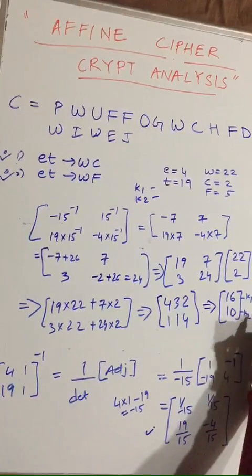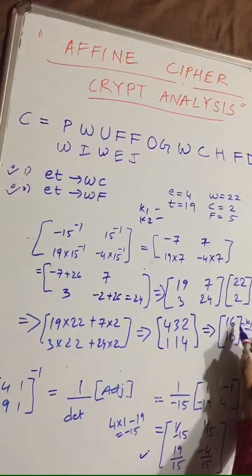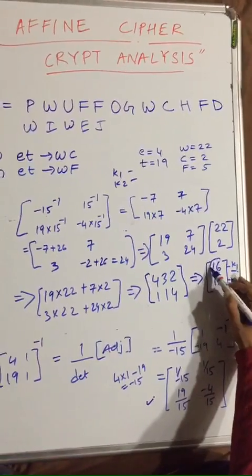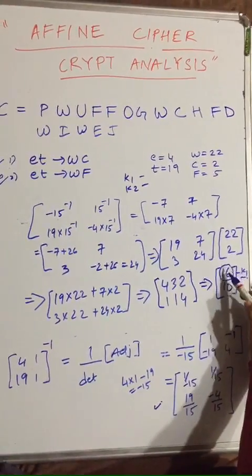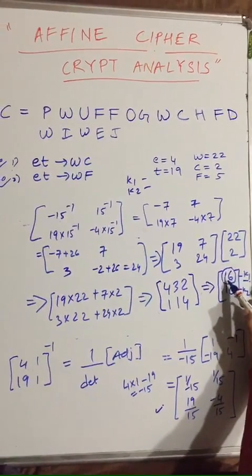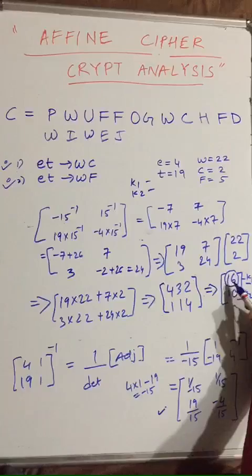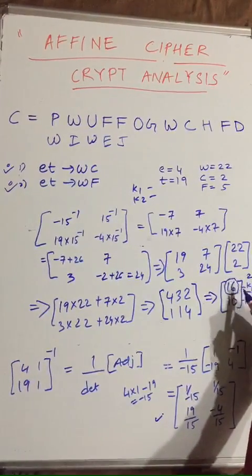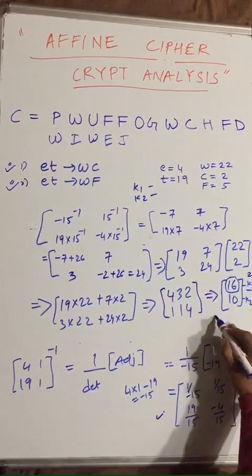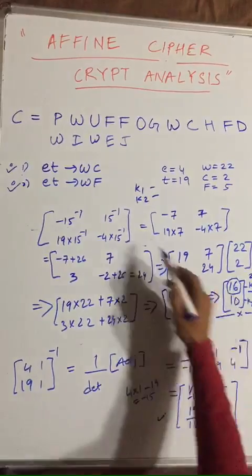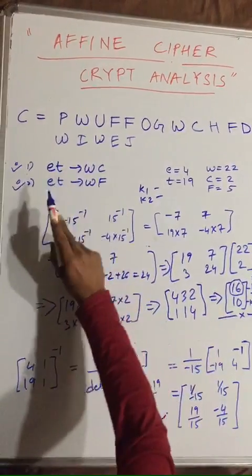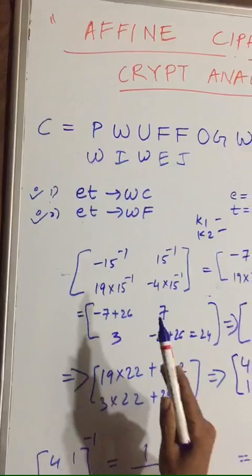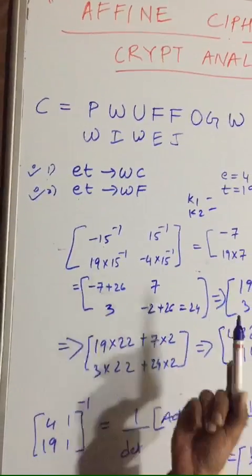However, for k1 we need gcd(k1, 26) = 1. But gcd(16, 26) = 2, which is not equal to 1, so this solution is not valid. We now have to move to the pair 'et'→'wf', which I will cover in the next video.